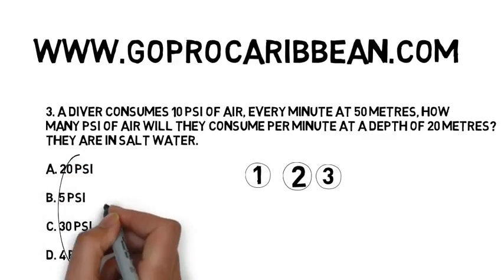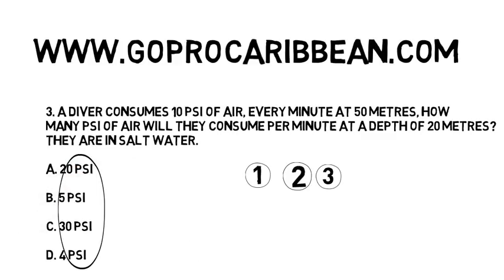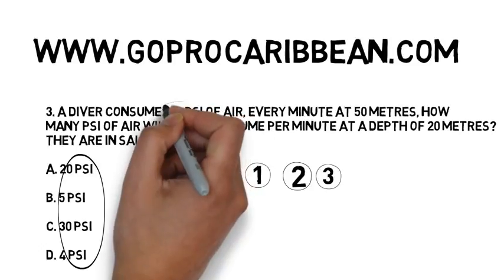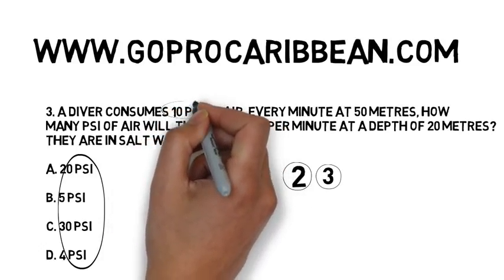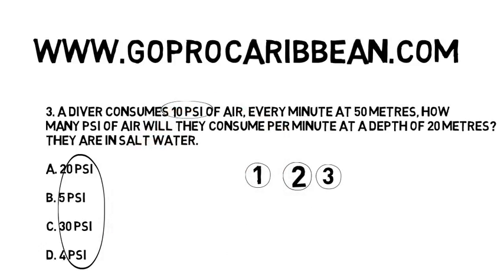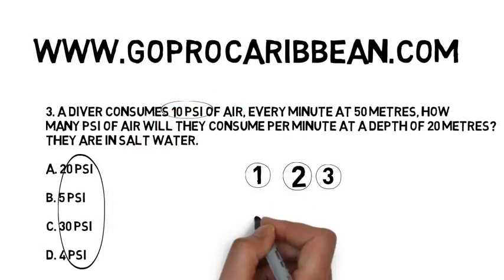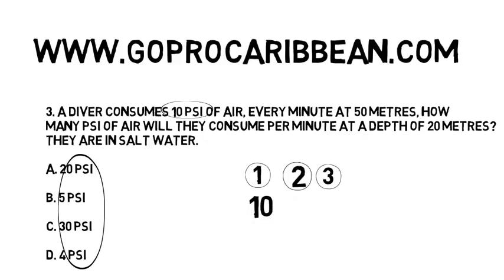So we look at the answers, we check the unit of measurement — it's psi. We then look at the question, find psi there, and our start point is the number of psi given, in this case 10.